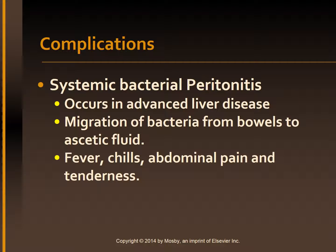Lastly, spontaneous bacterial peritonitis: patients with cirrhosis and ascites may develop acute spontaneous bacterial peritonitis, particularly those with advanced liver disease. The bacteria responsible are typically from the bowel and reach the ascitic fluid after migrating through the bowel walls and through the lymphatics. Clinical manifestations include fever, chills, abdominal pain, and tenderness.